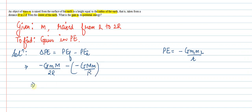Our gain in potential energy will be equal to G m M by 2r. This will be the gain in potential energy.